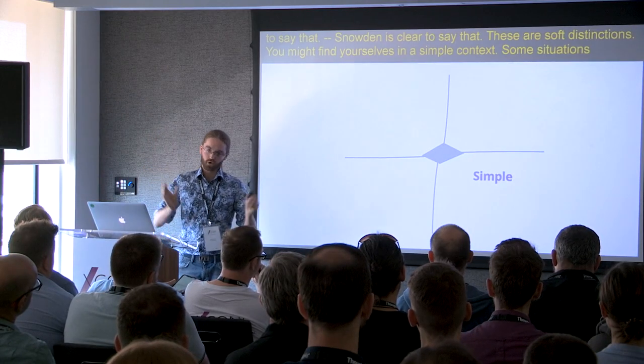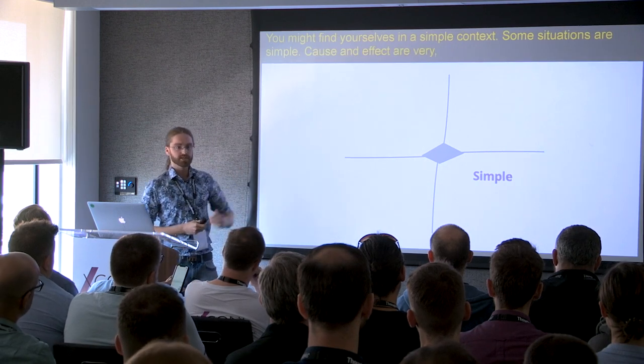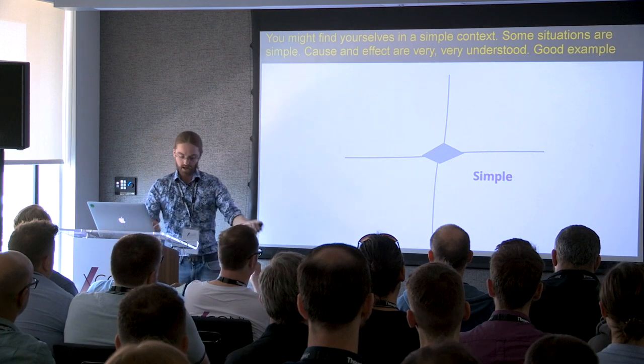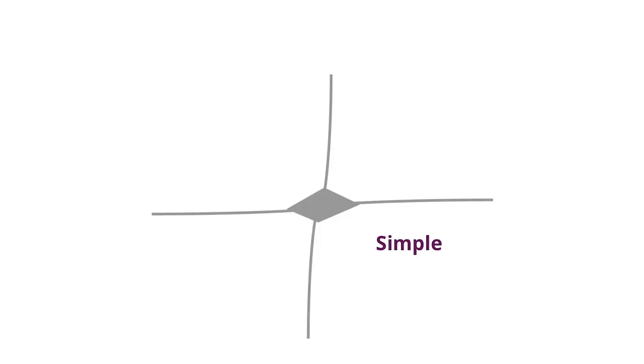You might find yourself in a very simple context. Some situations are simple. Cause and effect are very well understood. A good example of this would be a delivery company. If a package comes in and it's labelled urgent, you put it in this pile. If it's a local delivery, you put it in this pile. If it's an international delivery, you put it in pile C. Very simple. This is the kind of world which can be understood with rules, the kind of world that can be understood by a small child. You look at the world, you categorize it, you understand what rule applies, and then you apply it. Best practice is fine here.